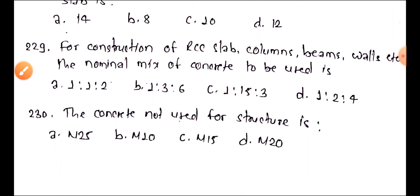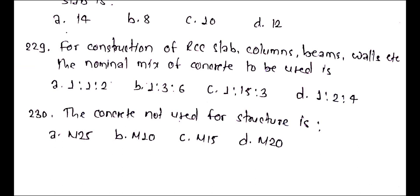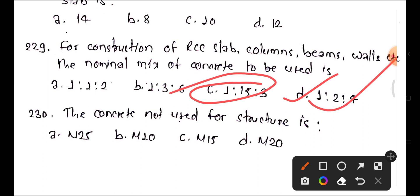Question 229: For construction of an access slab, cool beam, or wall, what is the nominal mix of concrete to be used? Options include 1:2:4 (M15) and 1:3:6 (M10). The correct answer is 1:3:6, which corresponds to M10 grade concrete.